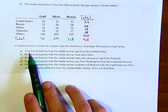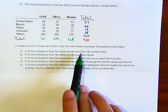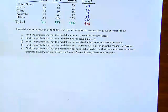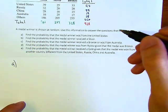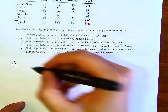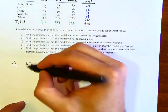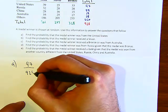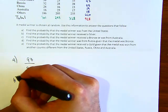Let's look at the first question. It says find the probability that a medal winner was from the United States. This one's not too bad. For letter A, if you know that there are 97 medal winners from the United States, you just put this over the total of 928, and that's your answer.